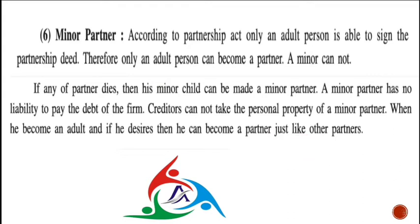Until the minor partner reaches adulthood, he shares in the profits of the firm but does not bear losses. The other active partners carry responsibility for the firm during this period. Upon turning an adult, he may choose to continue as a full legal partner.